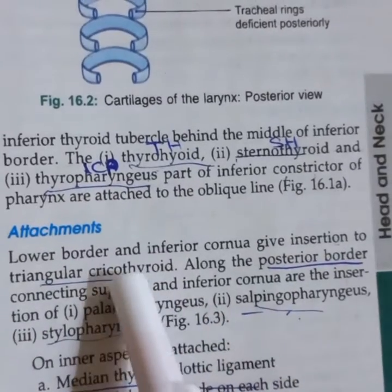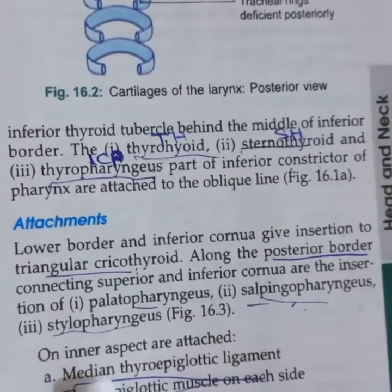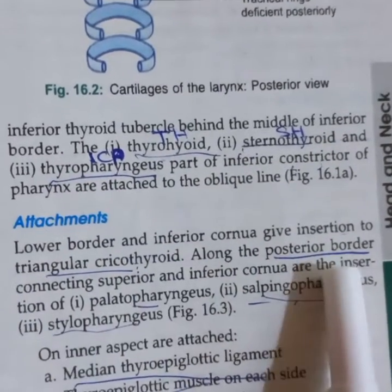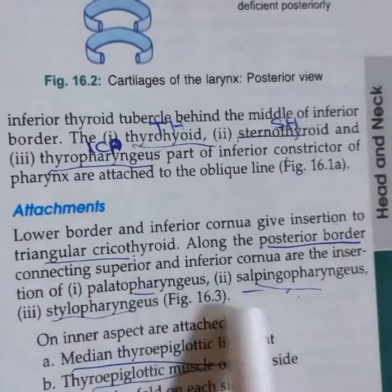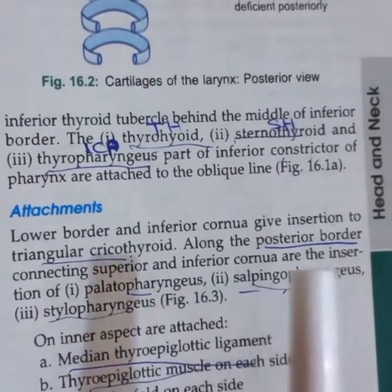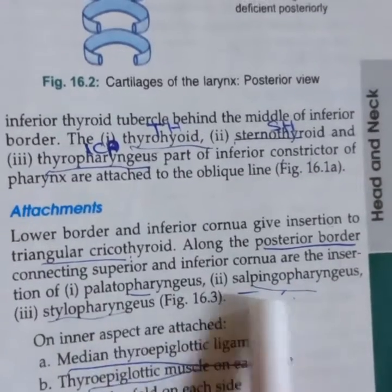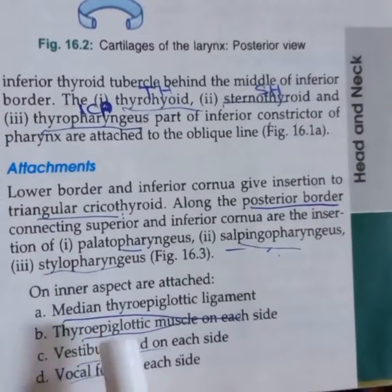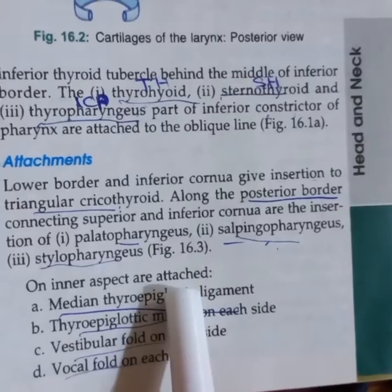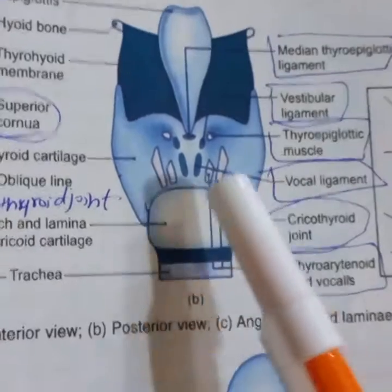The lower border and inferior cornua are inserted into the lateral cricothyroid. On the posterior border, we have the superior and inferior cornua. The palatopharyngeus, stylopharyngeus, and thyropharyngeus muscles are connected to the posterior border. On the inner aspect, we have the median thyroepiglottic ligament and the thyroepiglottic muscle.